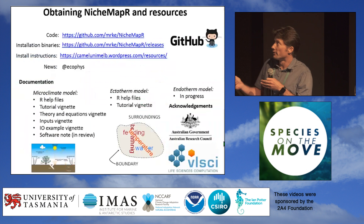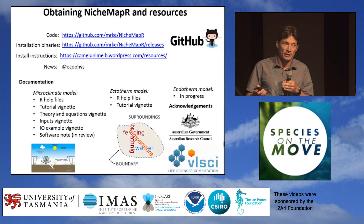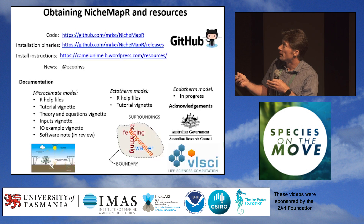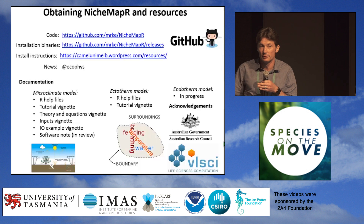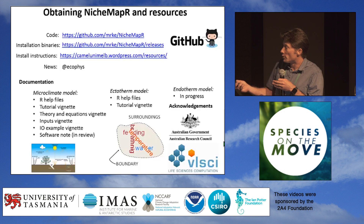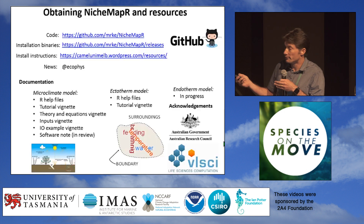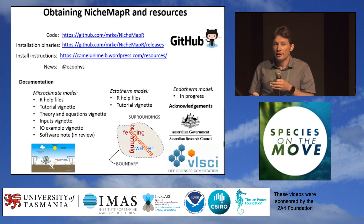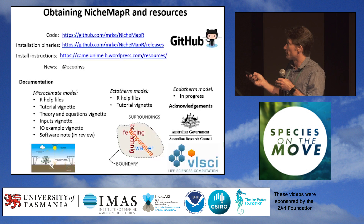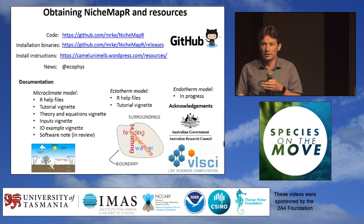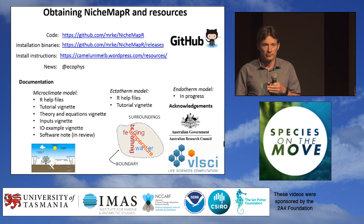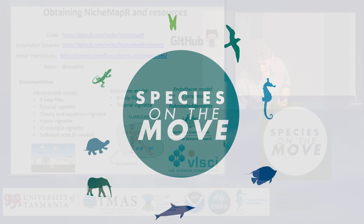The models are currently available through my GitHub repository — not on CRAN yet. Go to my lab's website resources page for instructions on how to obtain and install it. There's quite a bit of documentation for the microclimate model, with a software note in review. The ectotherm model documentation is following closely behind. I'd like to finish by acknowledging the Australian Research Council and the Victorian Life Sciences Computation Initiative for their support. I hope that in releasing this package, we see a whole lot more mechanistic analyses of how and why species are on the move. Thank you very much.